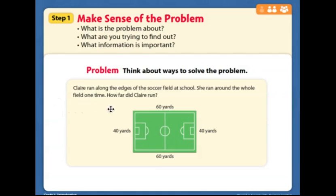Okay. And it looks like the picture is giving us a lot of the important information. I see there are 60 yards here and here and 40 yards on the shorter sides of the rectangle. So if we want to know how far Claire ran around the edges, what are you thinking that we would have to do?